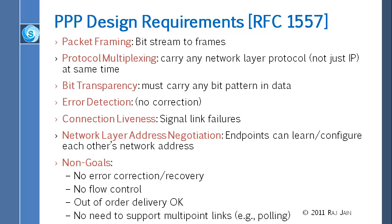Protocol multiplexing: PPP allows many users to use the same data link. You could be running IP, somebody could be running AppleTalk, somebody could be running Xerox XNS — there are other layer 3 protocols that could run on the same PPP. Bit transparency: PPP should allow you to send any bit pattern. Error detection: PPP ensures every frame is delivered correctly by using a checksum — a CRC. However, they decided they are not going to do correction. Liveness: whenever the link fails, it will tell users the link has failed.